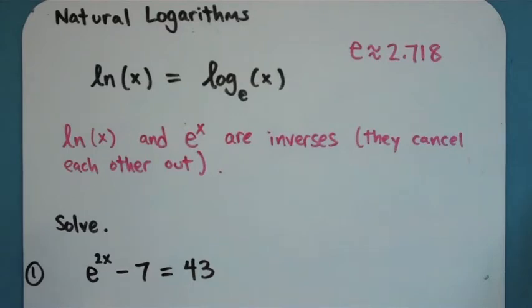Now in terms of what we're going to do with natural log in algebra 2, really what you need to know is that natural log and e to the x are inverses of each other. So natural log cancels out e's.